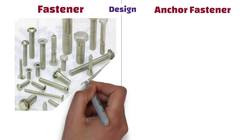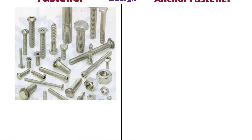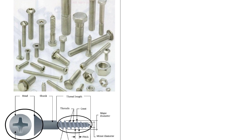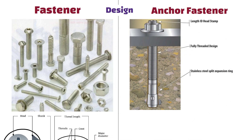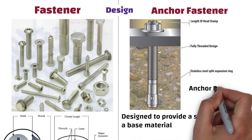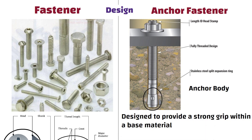Design: Fasteners come in various designs and configurations depending on their intended application. They can have threads, heads or other features that facilitate their installation and removal. On the other hand, anchor fasteners are typically specialized devices designed to provide a strong grip within a base material. They often consist of an anchor body, expansion mechanism and means of securing an object to the anchor such as a bolt or threaded rod.